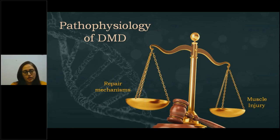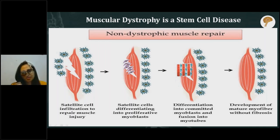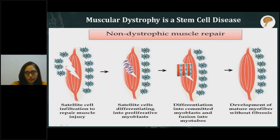To summarize the pathophysiology: muscle injury is much greater than the repair mechanisms can handle, and therefore there is progressive muscle weakness. This weakness starts around age five, where the repair mechanisms actually fail. Muscular dystrophy can actually be considered a stem cell disease. Stem cells, or satellite cells, are the repair mechanisms of the body. In non-dystrophic muscle, whenever there is injury, these satellite cells repair the muscle and it returns to normal. However, the number of stem cells available to the muscle reduces over time.